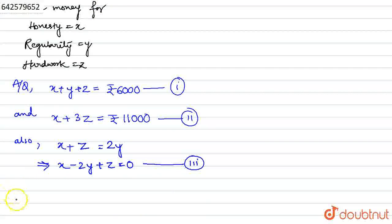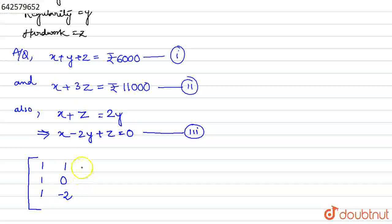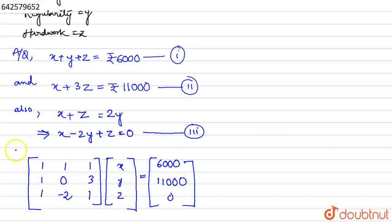Using the above three equations, I can write in matrix form. The coefficient matrix has rows: the coefficients of x, y, z are [1, 1, 1], [1, 0, 3], and [1, -2, 1]. The variable matrix is [x, y, z] and the constant matrix B is [6000, 11000, 0]. This is the required matrix form.